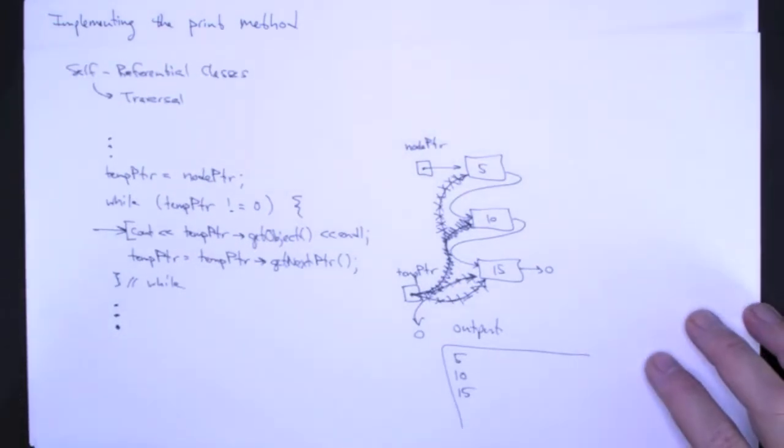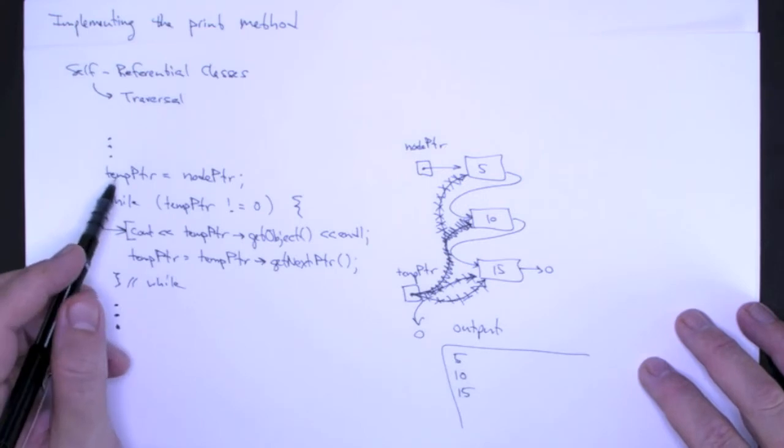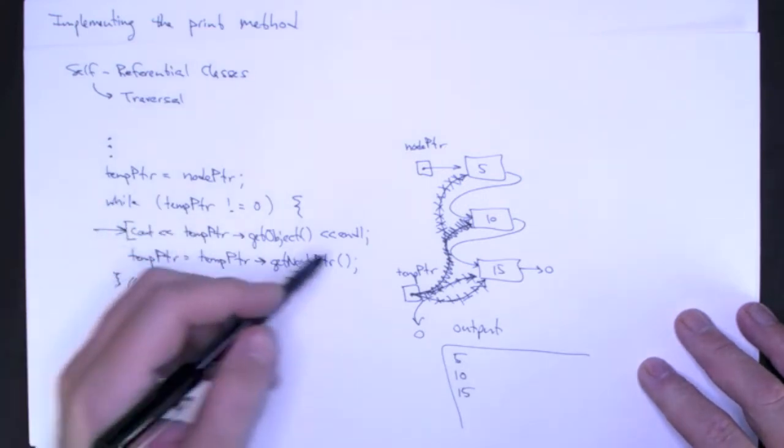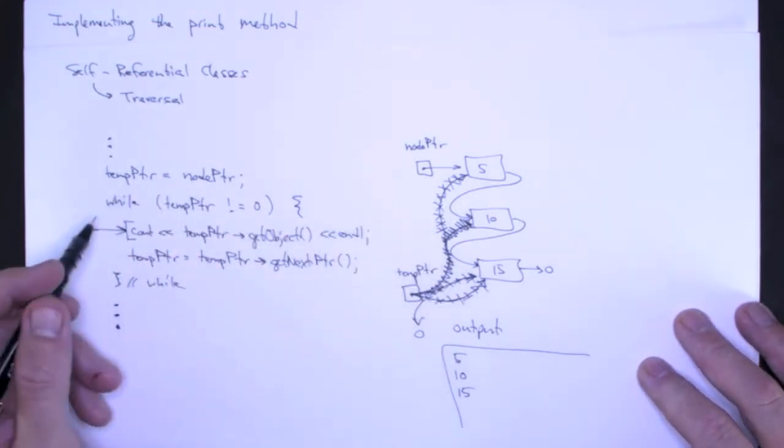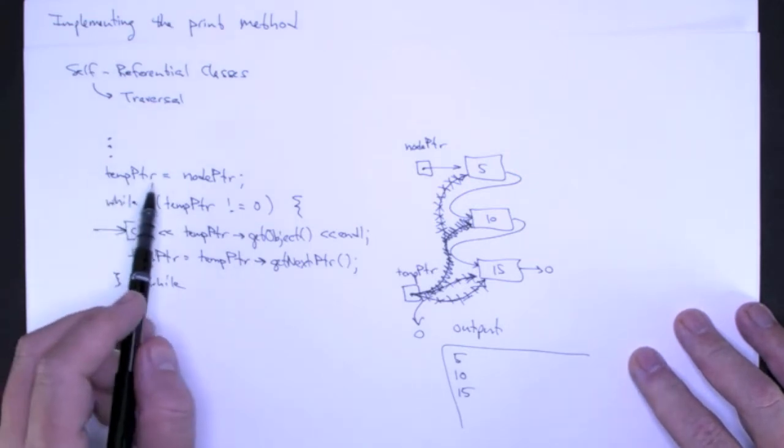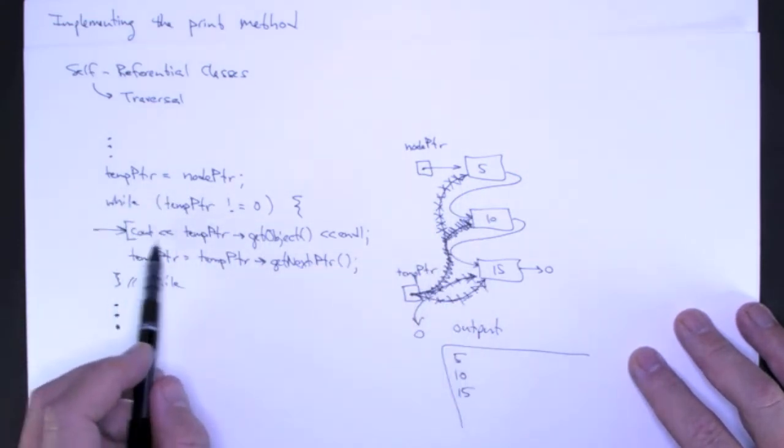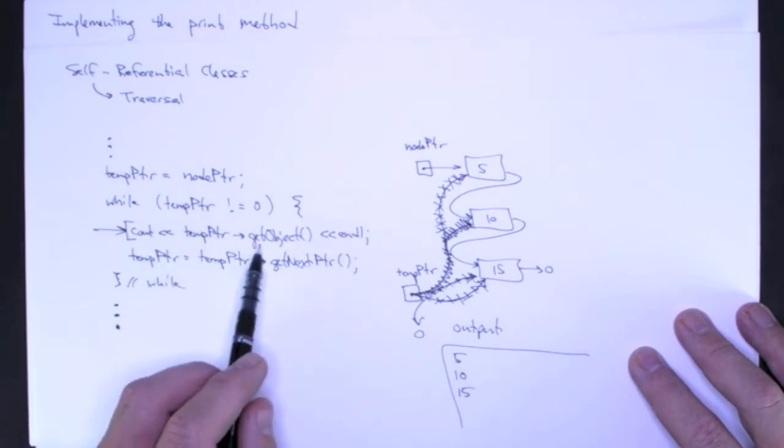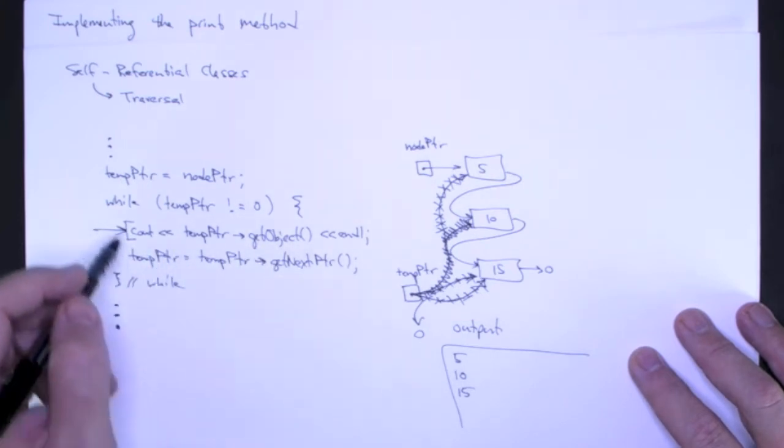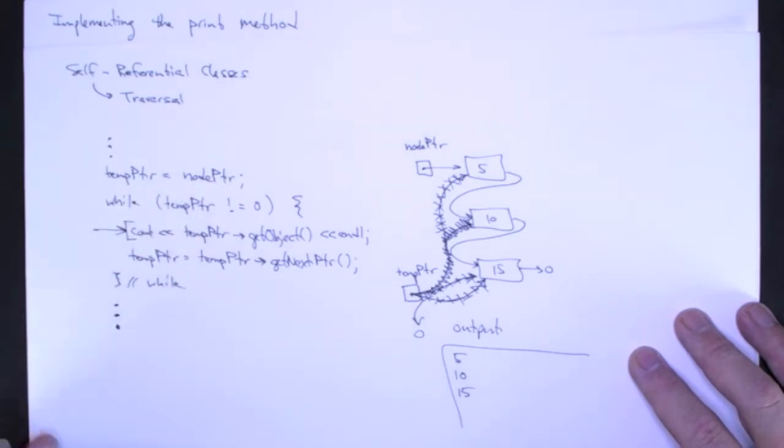If we go back to the example where we were exploring and tinkering with our node class, you can see here that I start at the beginning of the list, do a traversal, and print the object stored in the node. So this really is going to be our print method.